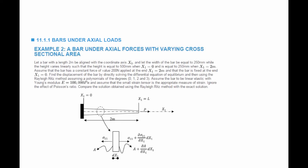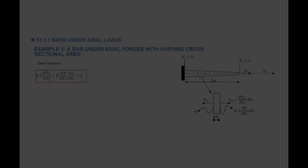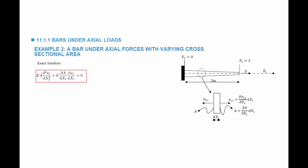We assume the bar is linear elastic with Young's modulus of 100,000 Pascal, and the small strain tensor is the appropriate measure of strain. We ignore the effect of Poisson's ratio so we can solve things by hand, and we will compare the solution obtained using the Rayleigh-Ritz method with the exact solution.